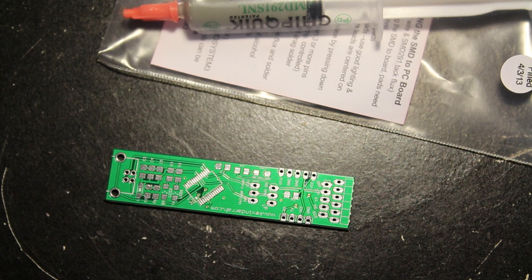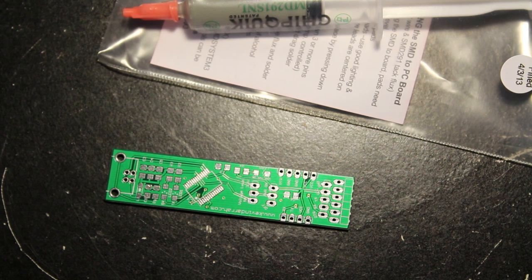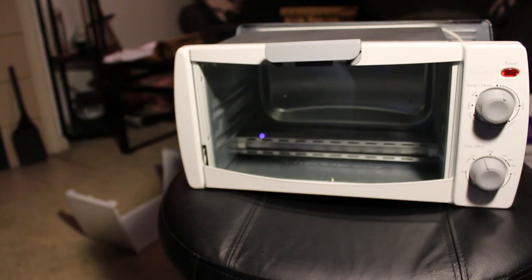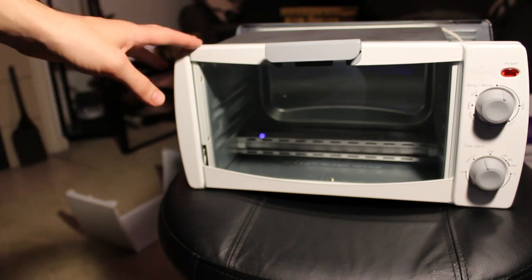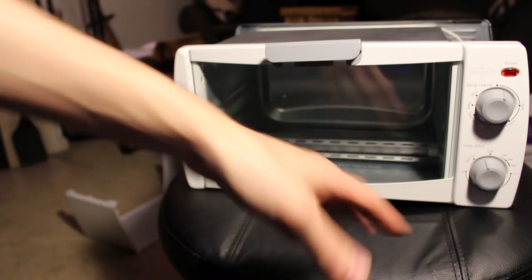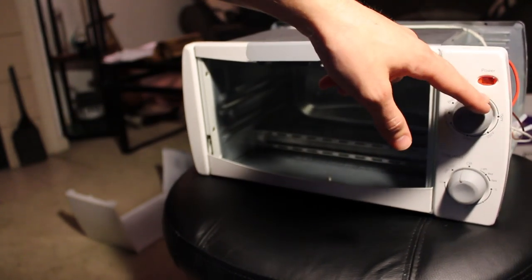But first, we need to figure out how we're going to control this reflow oven using the Arduino. So let's take a look at this toaster oven I bought. So here is the toaster oven I picked up, which is probably the cheapest toaster oven you can buy. It really doesn't have any features other than a timer that you can set and then the temperature of the oven.